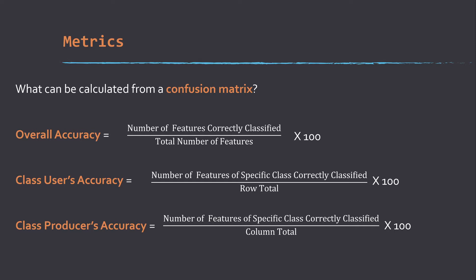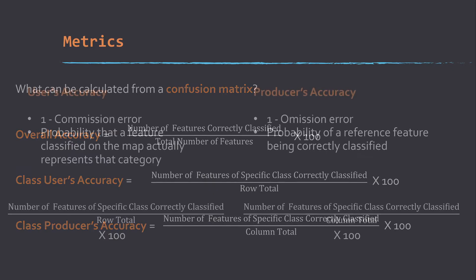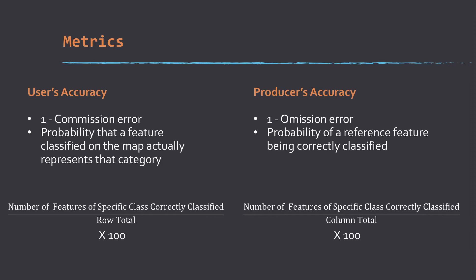Unfortunately, that doesn't give us a lot of information about class-level accuracy. What classes are being mapped well and not mapped well and which classes are being confused. We can also calculate class-level accuracies, but there are two broad types: user's accuracies and producer's accuracies. User's accuracy represents one minus commission error, whereas producer's accuracy represents one minus omission error. To be honest, I don't like these terms. I think they're confusing.